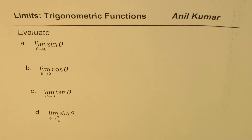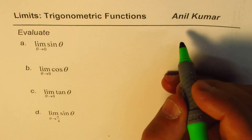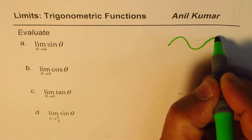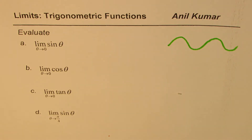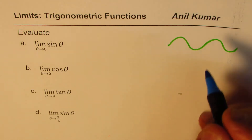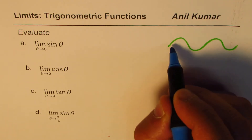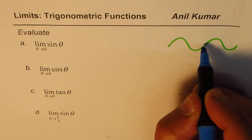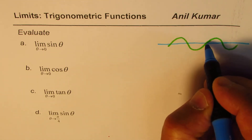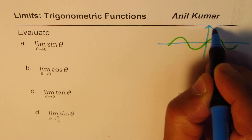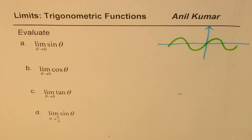Let's understand how to find these limits. For sine θ, I'll sketch the graph to help understand the concept. That is the sine wave — whenever we say sine, it starts at 0 and then increases. So I'll take this point: here is my x-axis where I write θ, and this is my y-axis — that's the sine wave.